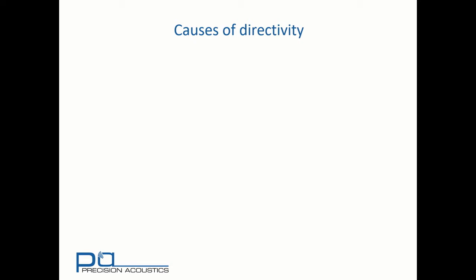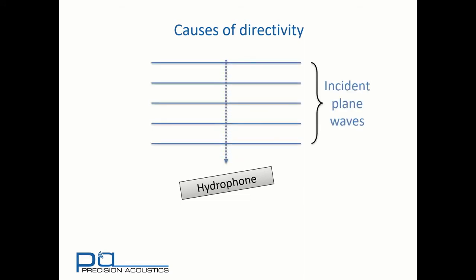What causes a hydrophone to have directional response? We'll consider here a hydrophone active element shown in cross-section. Plane waves are incident upon this hydrophone active element and their direction of propagation is shown by the dotted line. We can see that because of the orientation of the hydrophone active element, the normal to its surface makes an angle theta to the direction of propagation.